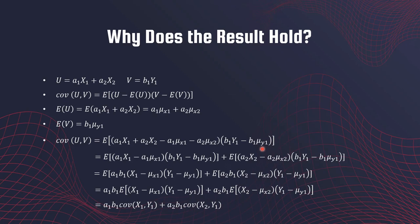Finally, we end up with the formula: a₁b₁ times covariance of (x₁, y₁), plus a₂b₁ times covariance of (x₂, y₁) — taking each combination of the two terms from u with the term from v.